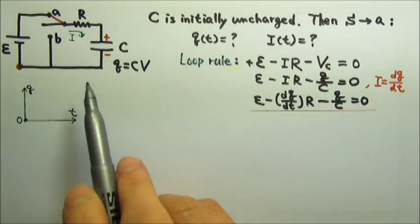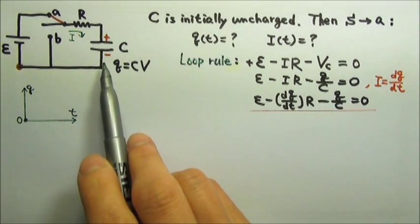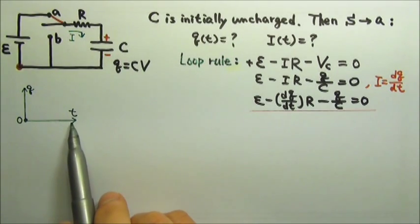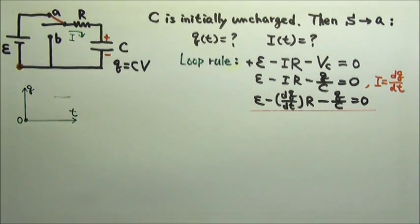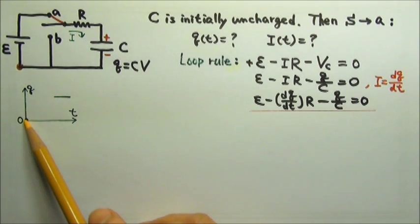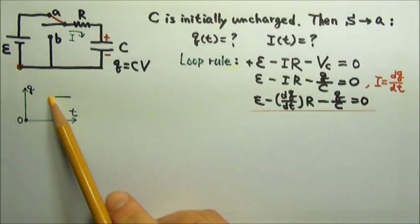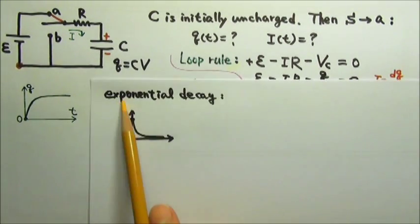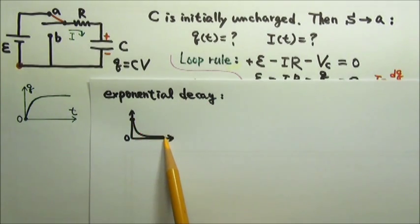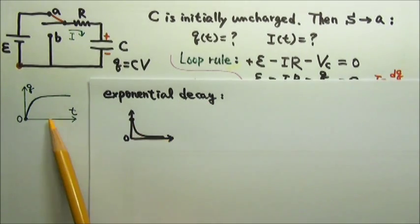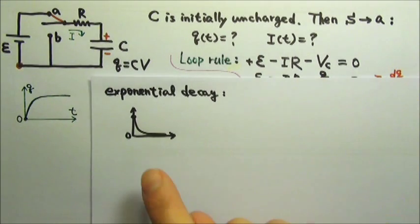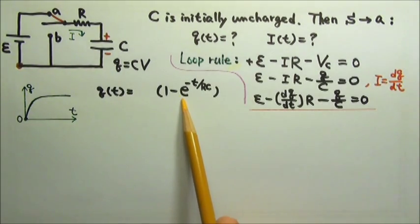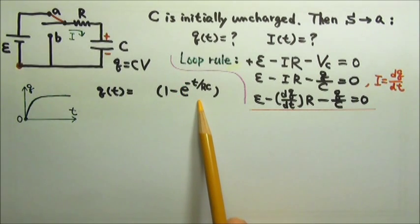A long time later, the capacitor will be fully charged, so the charge on the capacitor will be a fixed amount. So the graph is probably something like this. An exponential decay graph looks like this, and this is like a flip of the exponential decay — so it is a 1 minus exponential decay graph.